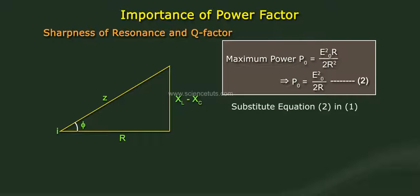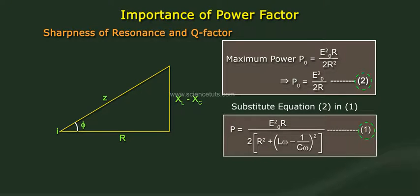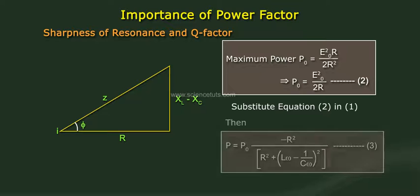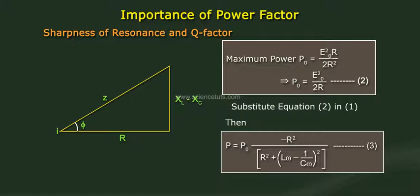Substituting Equation 2 into Equation 1, we get P equals P₀ × R² divided by [R² + (Lω − 1/Cω)²]. This is Equation 3.